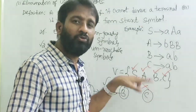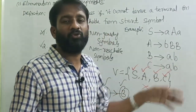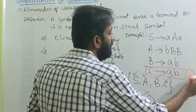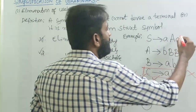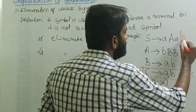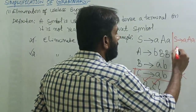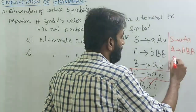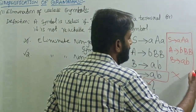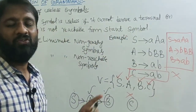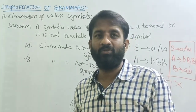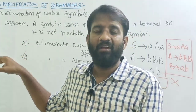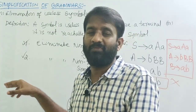We can eliminate the variable C from the grammar, along with its associated production C → ab. After eliminating, the final grammar is: S → aAa, A → bBB, B → ab. This is the grammar after eliminating useless variables. To summarize: eliminate useless variables in two steps — first, identify non-generating symbols; second, identify non-reachable symbols from the starting symbol.